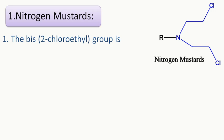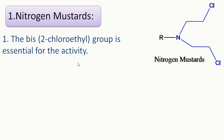The bis-2-chloroethyl group — 'bis' meaning two — consists of two molecules of 2-chloroethyl. You can see here one molecule of chloroethyl and here is another. The bis-2-chloroethyl group is essential for the activity of nitrogen mustards to act as an anti-cancer drug, to act as an alkylating agent. There must be this bis-2-chloroethyl group attached to the nitrogen.